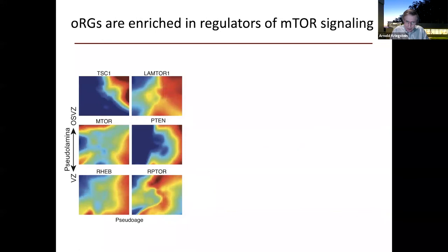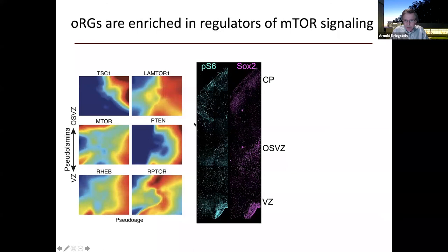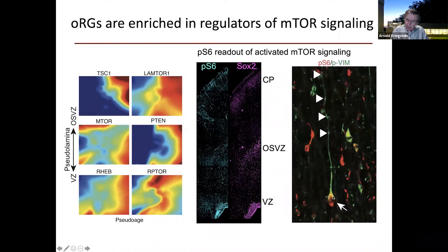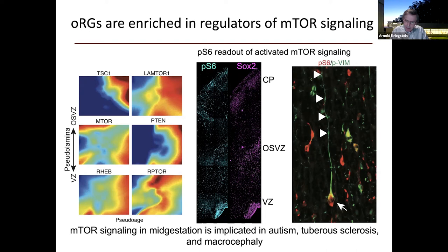Another pathway enriched in outer radial glial cells is mTOR signaling, shown in spatial and time-related maps highlighting expression of mTOR pathway genes. This was confirmed in tissue sections using phospho-S6, a readout of activated mTOR signaling, co-labeling the nuclei of outer radial glial cells and showing activated mTOR in the cytoplasm and fibers — more so than in any other progenitor in the developing cortex. We focused on mTOR because it's been implicated in diseases such as autism, tuberous sclerosis, and macrocephaly, suggesting its role in these diseases may involve outer radial glial function.